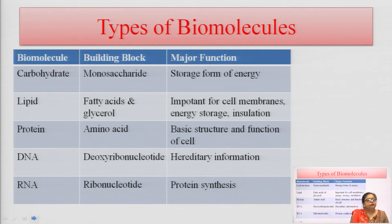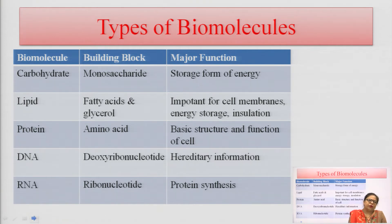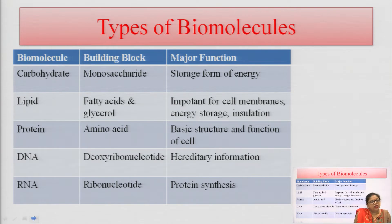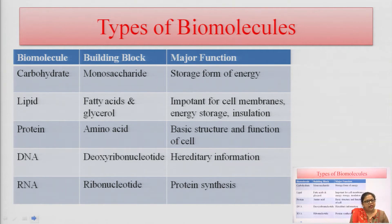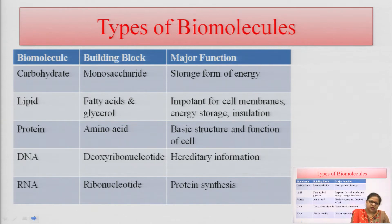The fourth is DNA. DNA is the basic material of genetic compounds, important for the transfer of genetic information from parent to offspring. The building block of DNA is deoxyribonucleotide. RNA has ribonucleotide as its building block and is basically responsible for protein synthesis.